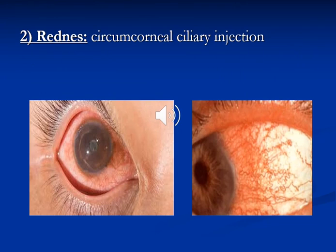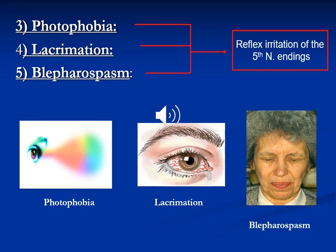The second symptom is redness, which is usually circumcorneal injection. Other symptoms include photophobia, lacrimation, and blepharospasm, all of which are usually due to reflex irritation of the trigeminal nerve.